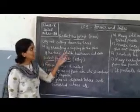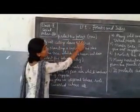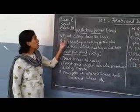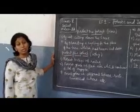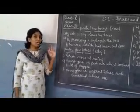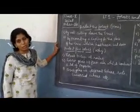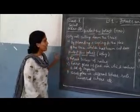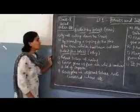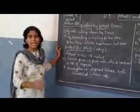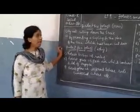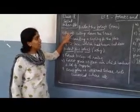We will continue with the same lesson, forest and tribes. How to protect the forest? Forest plays an important role in our life. First, by not cutting down the trees — one single tree provides oxygen for four people, and without oxygen we cannot survive, so trees play an important role. Next, by planting a sapling in the same place of the tree which has been cut down. If you cut any tree in the forest, again we have to plant a sapling in the same place so that the forest area will not be cut down indiscriminately. By these two methods we can protect the forest.